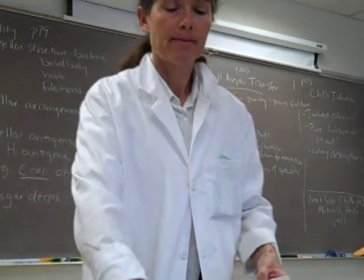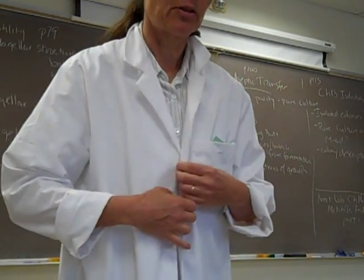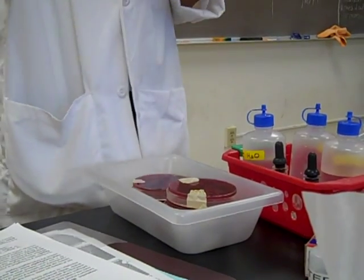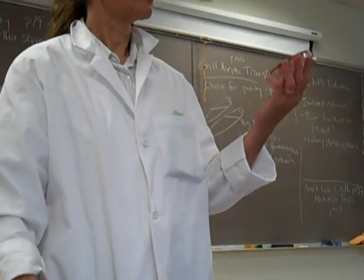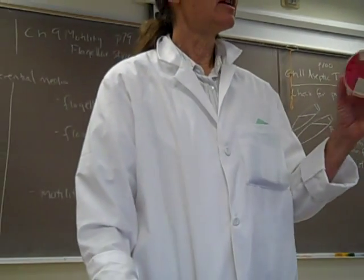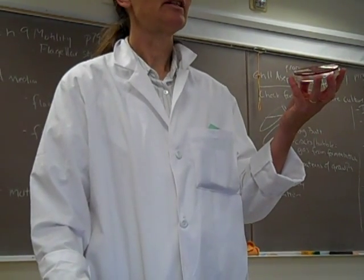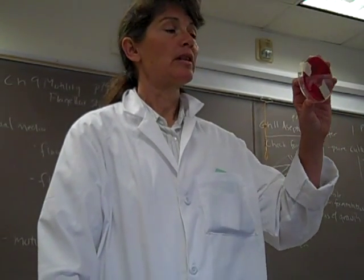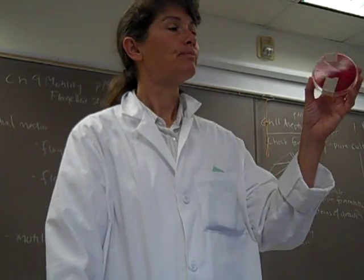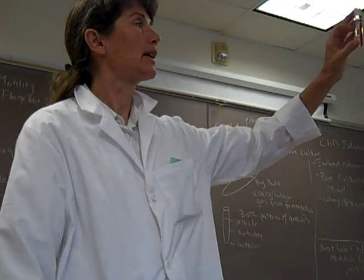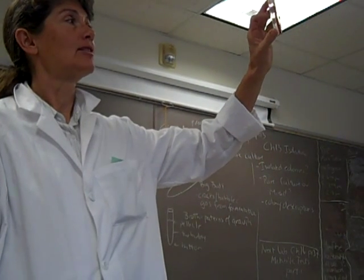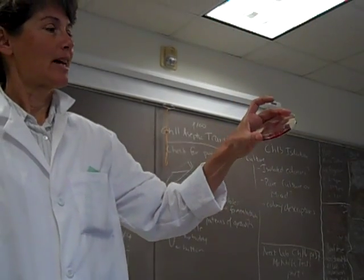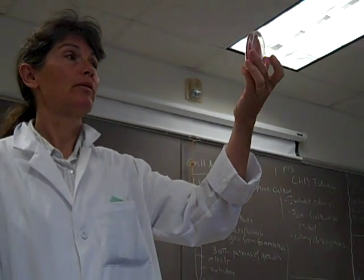They take an all-purpose medium such as tryptocase soy medium and wash the red blood cells to remove antibodies and the liquid portion of the blood. While the medium is still hot from the autoclave, it's cooled a little bit so when the red blood cells are added they won't lyse. We can see this beautiful bright red color provided by the red blood cells and hemoglobin. In atmospheric air the hemoglobin is oxygenated, so it's a bright red color.